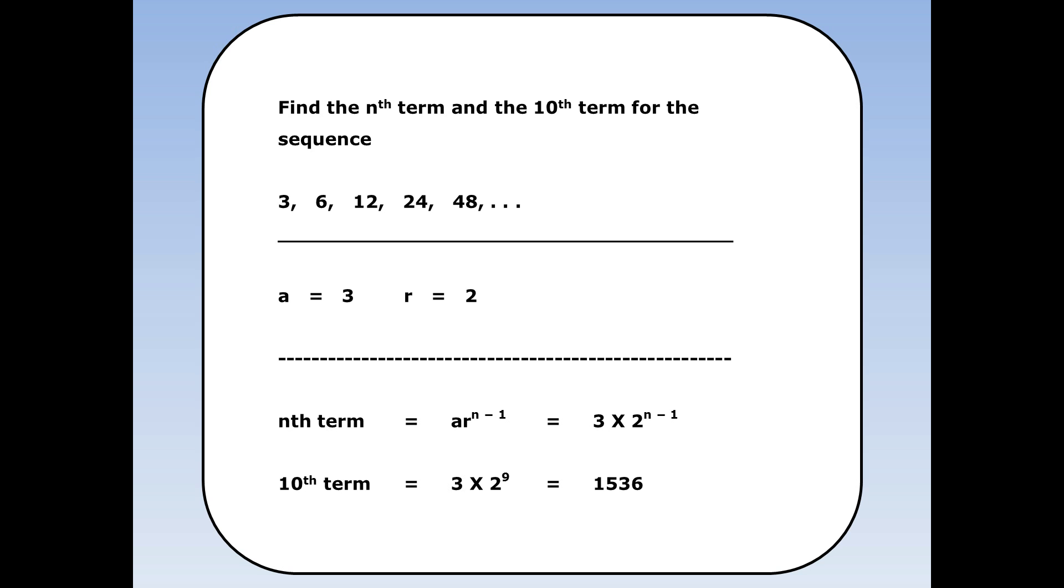For the 10th term, we use the same formula, a times r to the power of n minus 1, where n is 10. We end up with 3 times 2 to the power of 10 minus 1 is 9. This equals 1536.